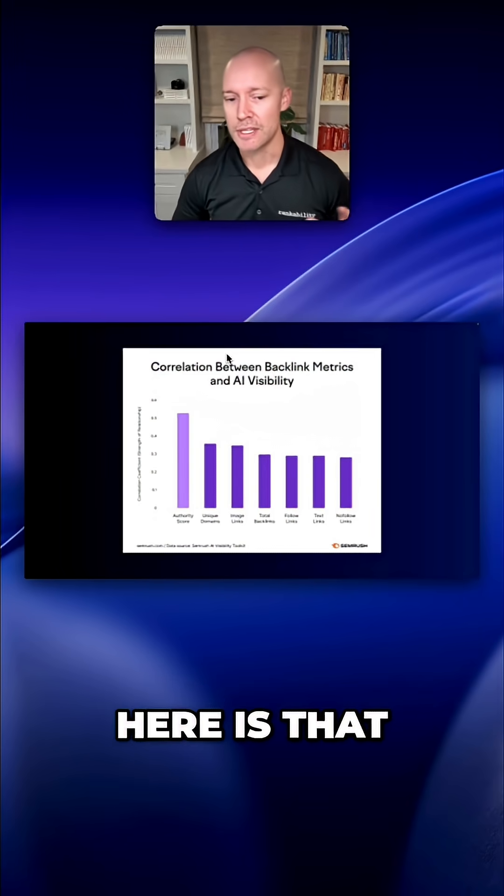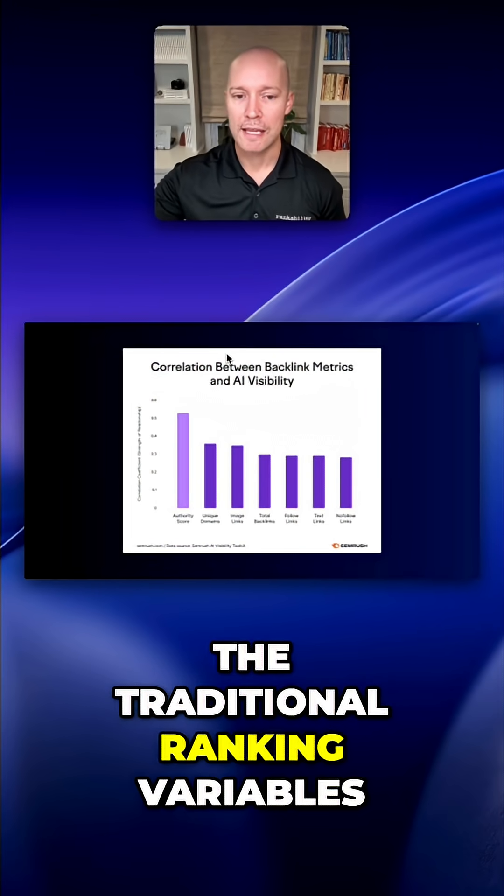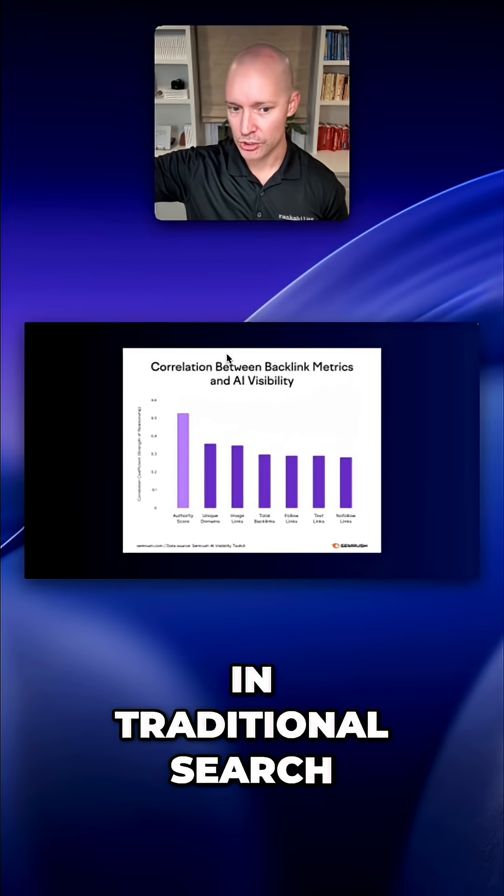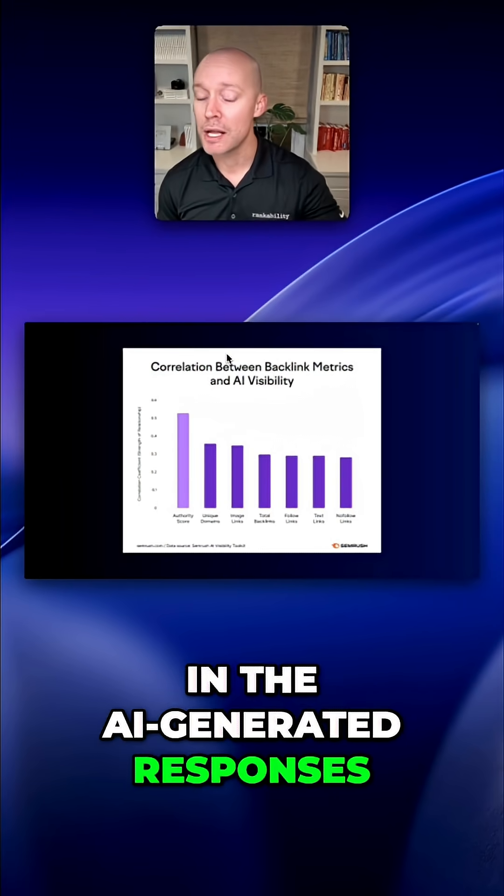So the main takeaway here is that once again, proving that if you focus on the traditional ranking variables in traditional search, you can also increase your odds of appearing in the AI-generated responses.